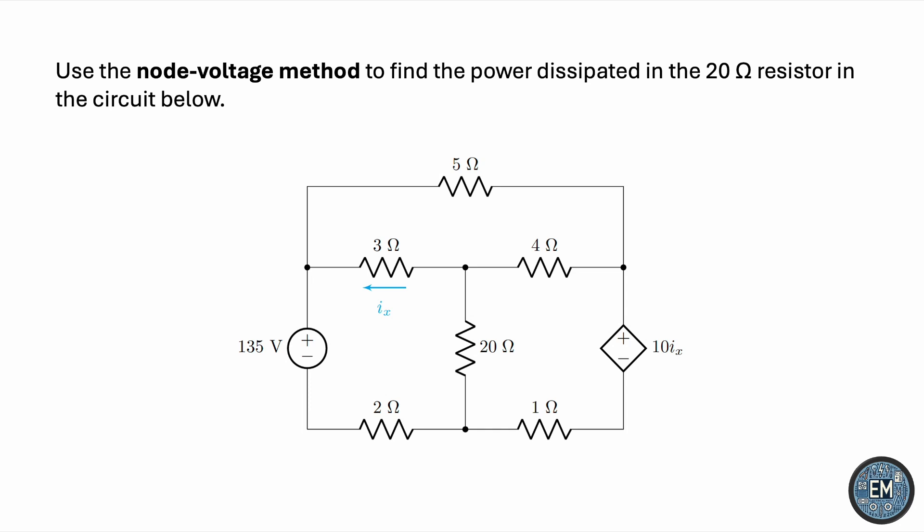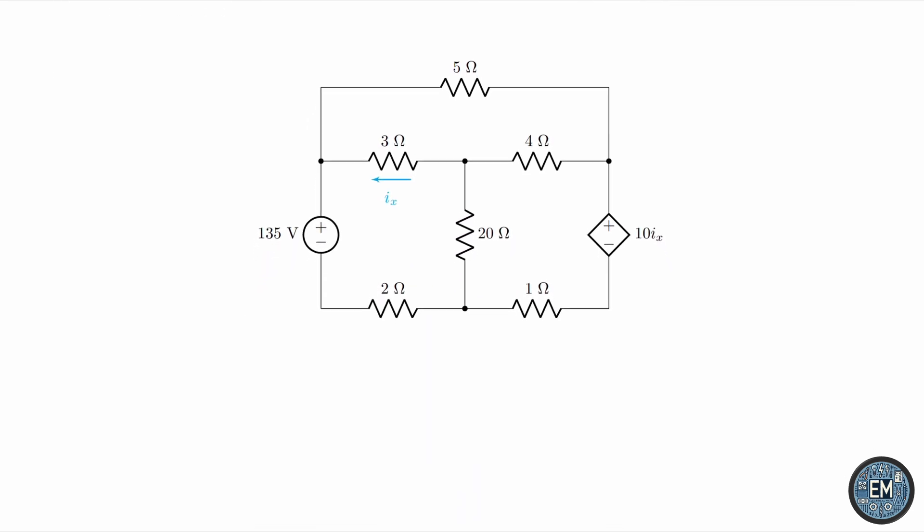Use the node voltage method to find the power dissipated in the 20-ohm resistor in this circuit. This problem is not easy, and it's not because of the dependent source we see on the right, it's actually because of those two innocent-looking resistors.